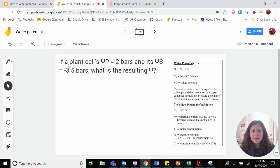First one: If a plant cell's pressure potential equals two bars, and its solute potential is negative 3.5 bars, what is the resulting water potential? This seems pretty straightforward. Let's do it.